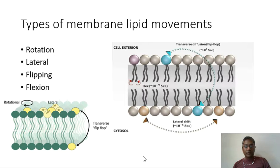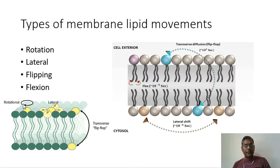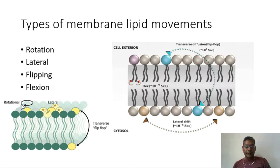Using phospholipids as an example, the first type of movement is rotational. Here the phospholipid rotates on its own axis to interact with its immediate neighbors.